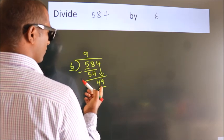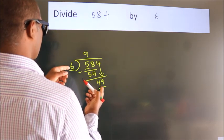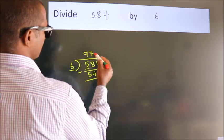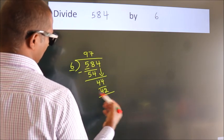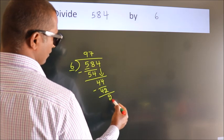A number close to 44 in the sixth table is 6 sevens, 42. Now we subtract. We get 2.